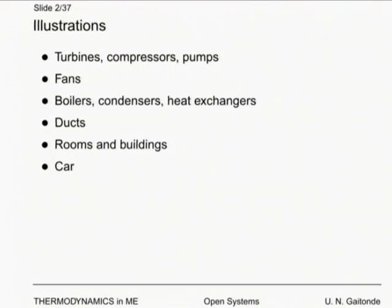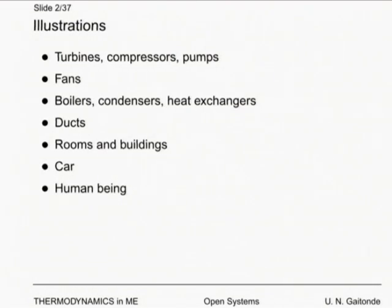For example, a car is a very complicated open system: fuel goes in, exhaust comes out, air is also taken in, and water is periodically supplied. A human being is a very, very complicated open system. There is no end to the number of open systems you can think of.